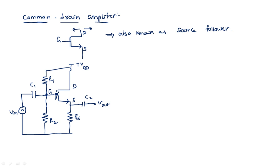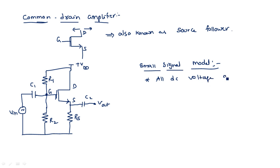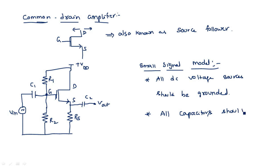Now we need to draw the small signal equivalent model, after which we can calculate the voltage gain, input impedance, and output impedance. To draw the small signal model, two rules must be remembered: first, all DC voltage sources should be grounded; second, all capacitors — including both bypass capacitors and coupling capacitors — should be short-circuited.